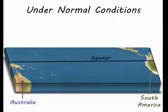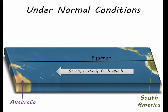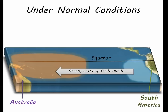Now let's take a closer look at this region under normal or neutral conditions. Strong easterly trade winds blow warm surface water west towards Australia. This allows cold water to upwell along the coast of South America. This is where the ocean begins to interact with the atmosphere. Colder water results in relatively high pressure, and the warmer water results in relatively low pressure.